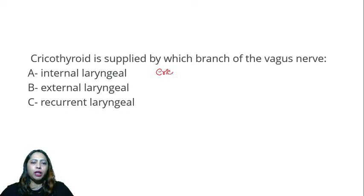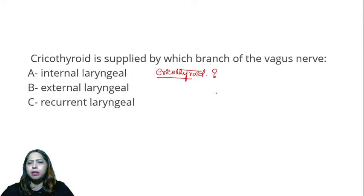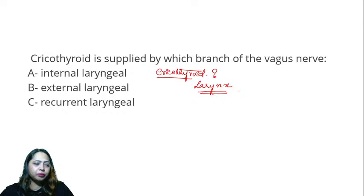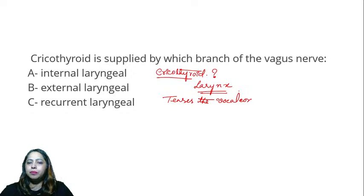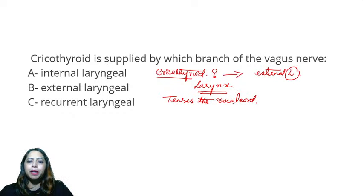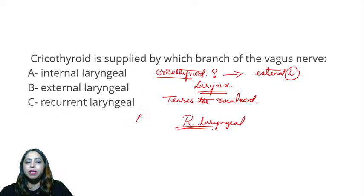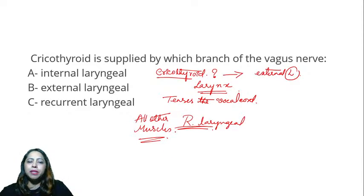What is the function of the cricothyroid? We have various muscles present in the larynx. The cricothyroid is an important muscle that tenses the vocal cord. It is the only muscle supplied by the external laryngeal nerve. All other laryngeal muscles are supplied by the recurrent laryngeal nerve, except cricothyroid which is supplied by the external laryngeal.